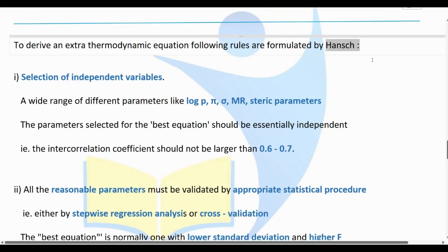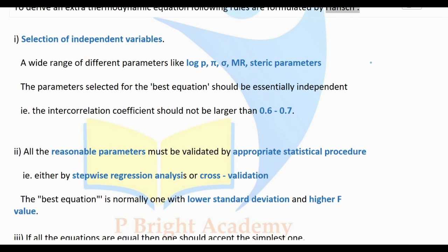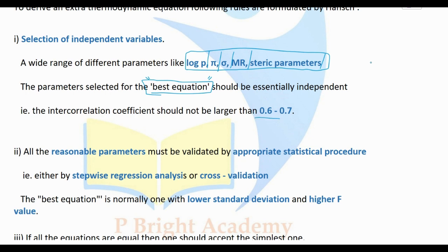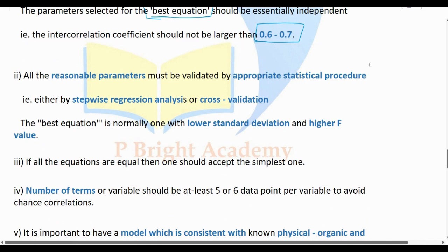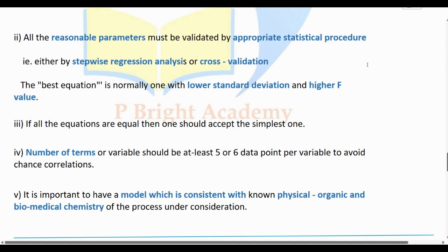To select the parameters for Hansch analysis, the variables should be independent variables. The correlation coefficient between variables should not be larger than 0.60. Statistical analysis is derived, and all reasonable parameters should be validated using appropriate statistical procedures.